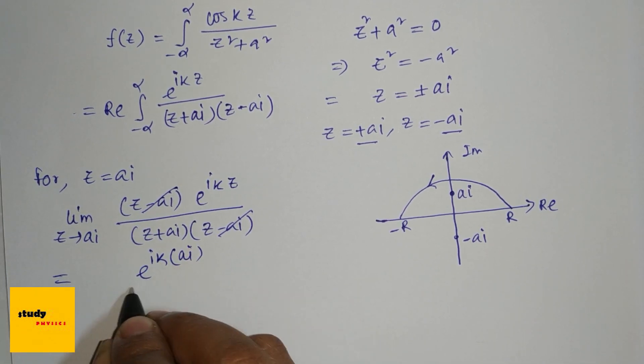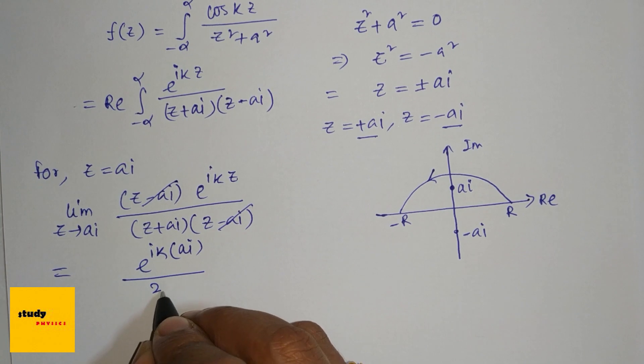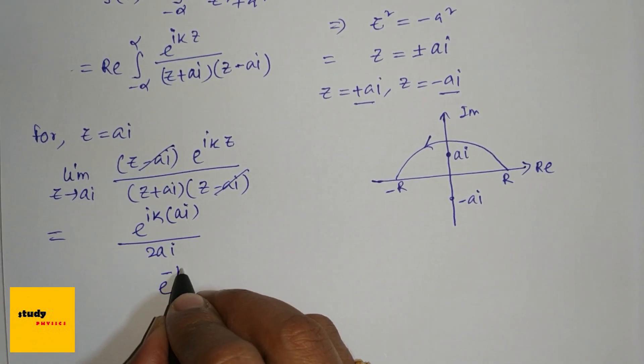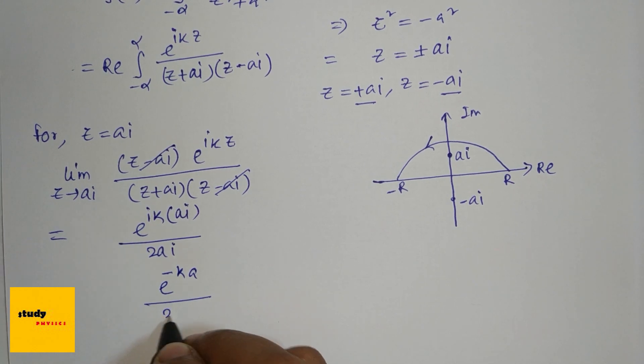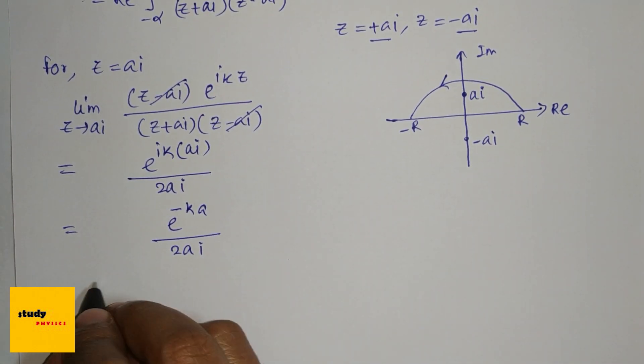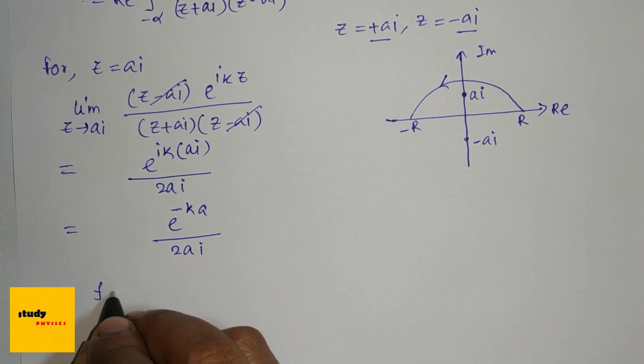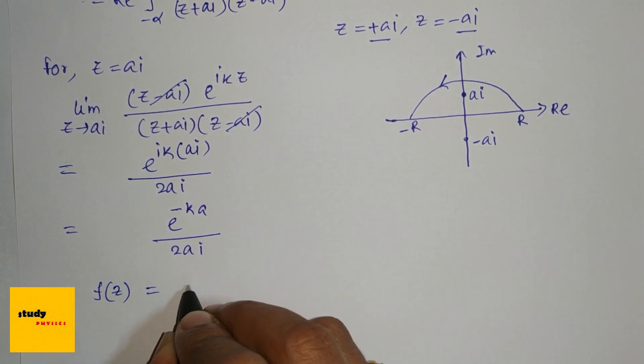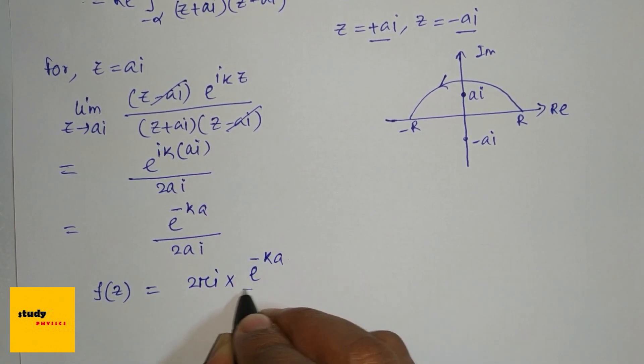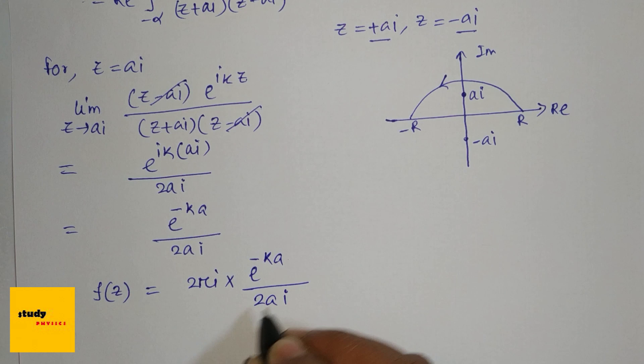This simplifies to e^(-ka)/(2a). Now, by the residue theorem, the value of the function is 2πi times the residue, which is 2πi times e^(-ka)/(2ai), giving π/a times e^(-ka).